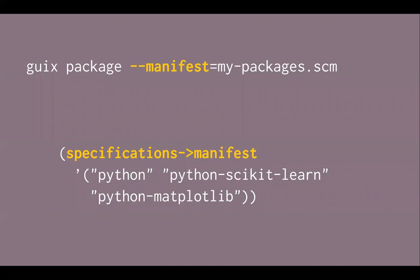That's the main idea. Instead of typing a bunch of commands, you can also store in a file everything you want to deploy — for example, three lines saying: I want to deploy these three packages: Python, scikit-learn, and numpy. Then you can pass it to Guix and it will deploy precisely those three packages. That's convenient because you can put that file in version control and share it with colleagues.